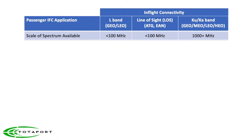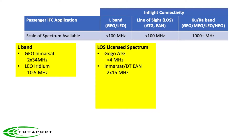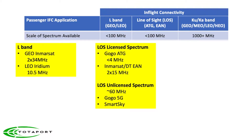In-flight connectivity involves applications, and those applications require radio spectrum. Different kinds of radio systems use different amounts of spectrum. L-band systems started in 1990 with Inmarsat, and Iridium followed about 10 years later. Line-of-sight or LOS services come in two flavors: licensed spectrum examples are Gogo ATG and Inmarsat Deutsche Telekom European Aviation Network. Emerging line-of-sight services using unlicensed spectrum include SmartSky and Gogo 5G.